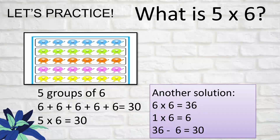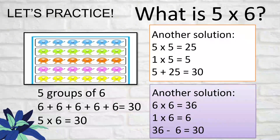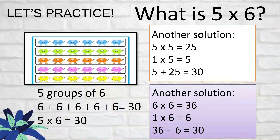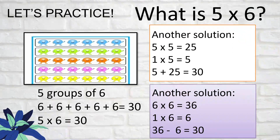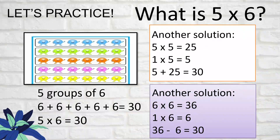Another method: what if you forgot five times six but you remembered five times five, which is 25? To make it five times six, you need one times five, which is five — because five plus one is six. So add 25 and 5, which makes 30. That is five times six.